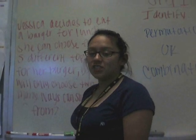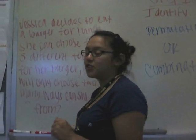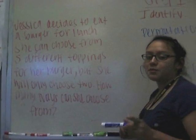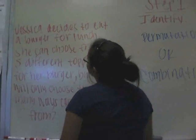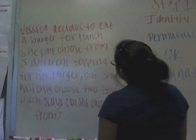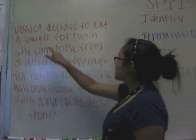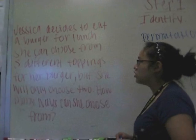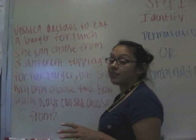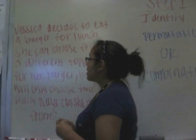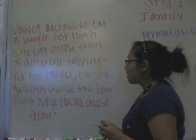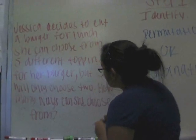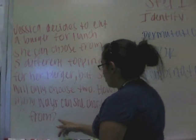Hi, my name is Jessica and I'm going to show you how to solve a probability problem. Here's the problem: Jessica decides to eat a burger for lunch. She can choose from five different toppings for her burger, but she chooses to only eat two. So, how many ways can she choose from?